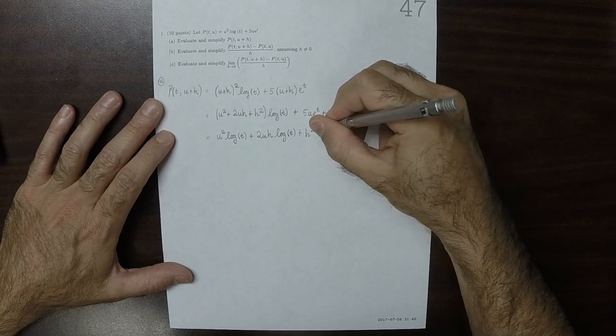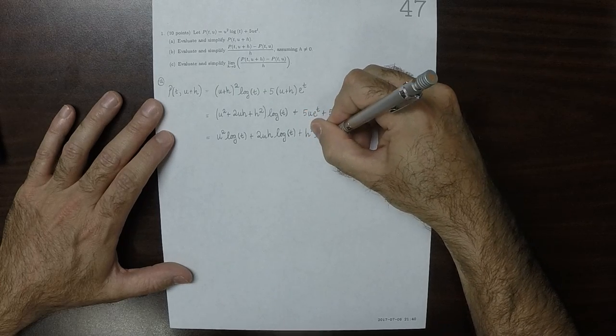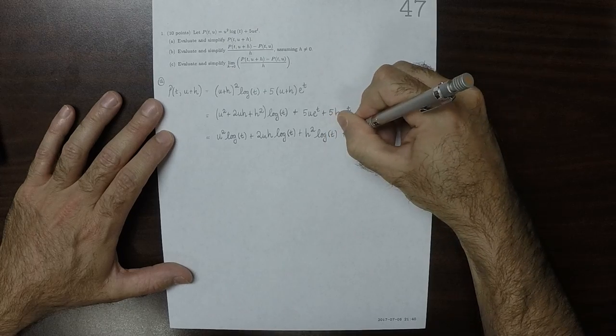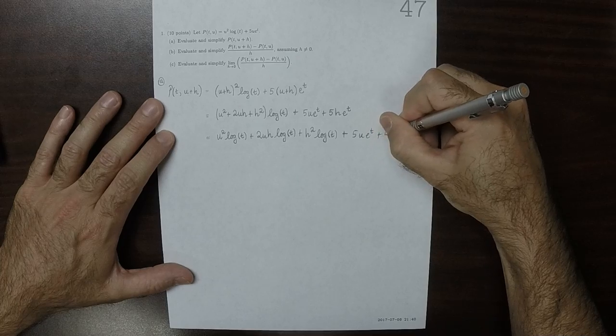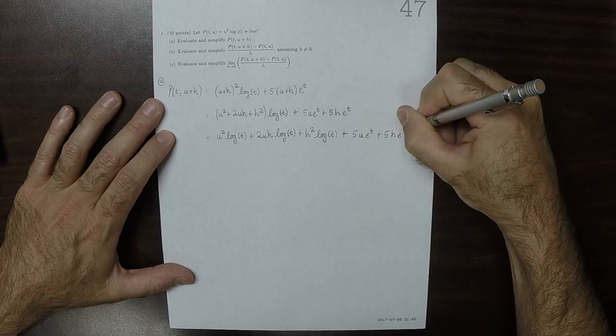plus h squared log of t plus 5u exponential t plus 5h exponential t.